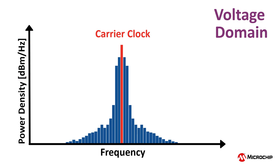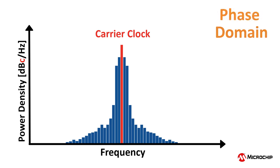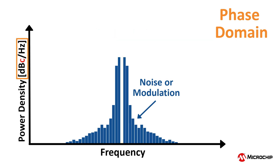Now, let's move over to the phase domain. We use a piece of equipment called a phase noise analyzer to display a carrier clock with noise or modulation quantified as dBc per hertz phase domain power spectral density that is not at the ideal center carrier frequency.